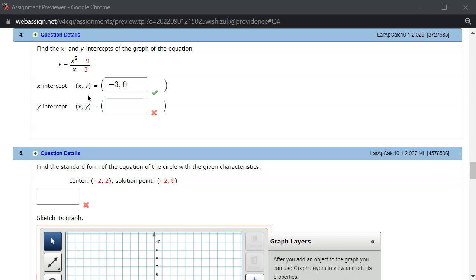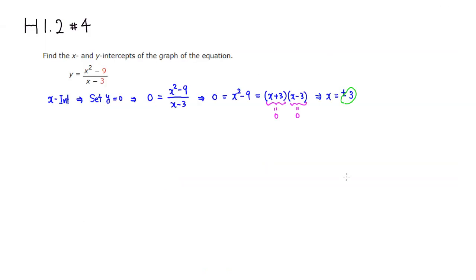I came back, and it looks like we found the x-intercept, so let's find the y-intercept. We have to kind of do the opposite. If you want to find the y-intercept, all you have to do is set x equal to 0.